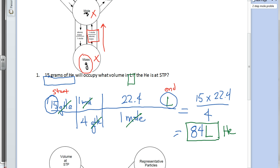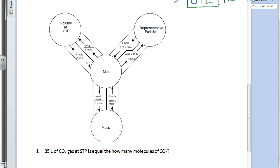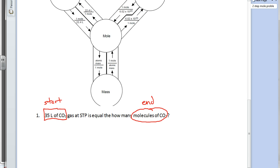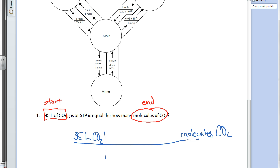Let's look at another one that takes us in a different direction on the mole road. We've got our mole road map out. The problem says: 35 liters of carbon dioxide gas at STP — standard temperature and pressure — is equal to how many molecules? Our known quantity is 35 liters of CO2, and we are trying to find molecules. Remember, molecules is different than moles. Even though molecules has the word 'mole' in it, they're two different places on the mole road.